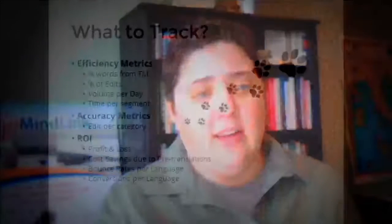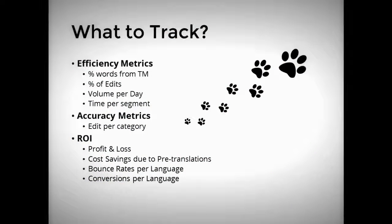I read an article recently about augmented humans — human translation is so important, but having tools and using computing power to affect quality is really critical. When we track how many words were used from translation memory, the higher that number, in many cases the better, because it means we had those terms already agreed upon and effective.